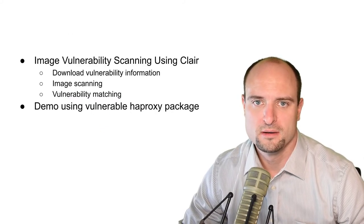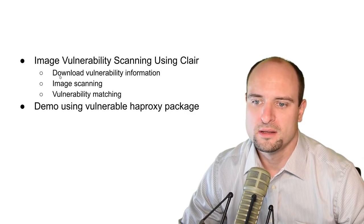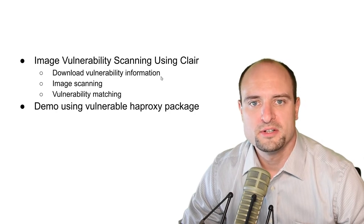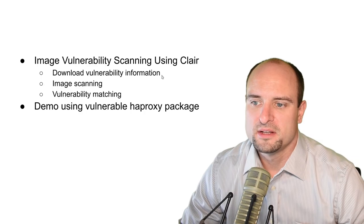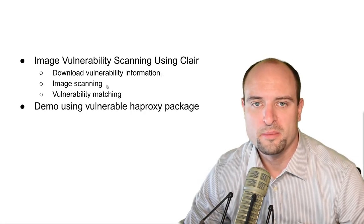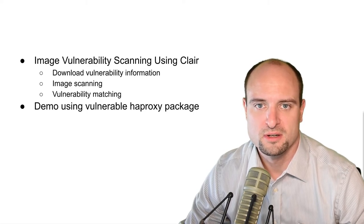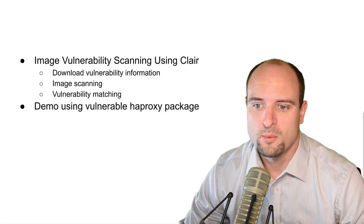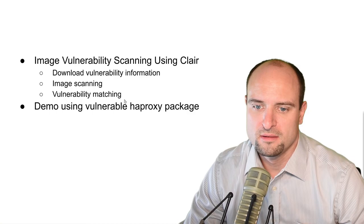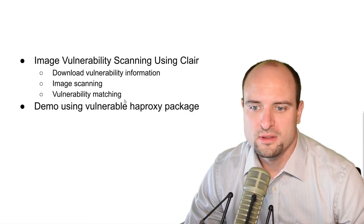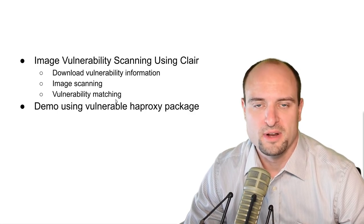Let's review what we covered in this video. We discussed the image vulnerability scanning process using Clair. The process starts with downloading vulnerability information provided by individual distributors, which only covers vulnerabilities in distribution packages. The second step is image scanning, where Clair discovers what distribution, repositories, and packages were installed on the image. The last step is vulnerability matching, where Clair matches the content found in the image with the vulnerability databases and generates the final vulnerability report.